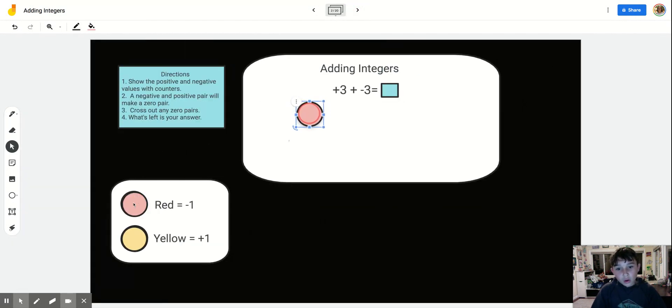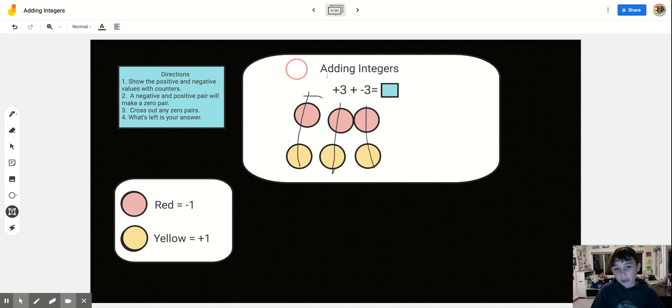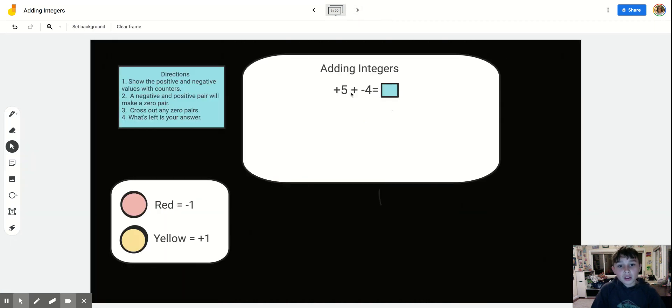So we have negative 3 and positive 4. And this time we have everything's a zero pair. Because all the negatives cross out all the positives. So that means we have zero remaining.